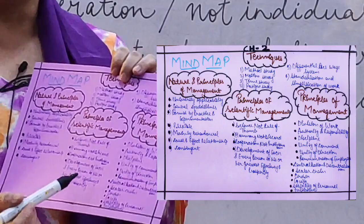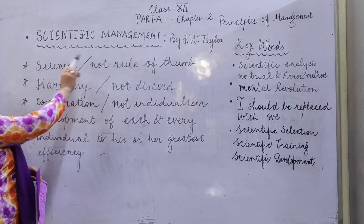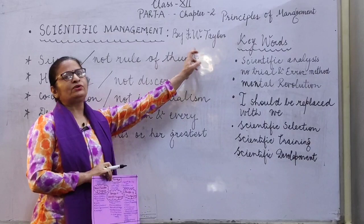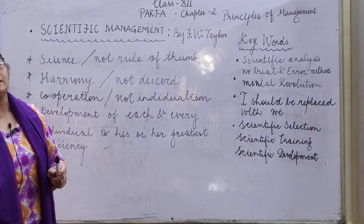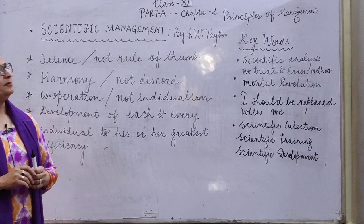Now the sequence is for Scientific Management by F.W. Taylor. With the help of this board, I am going to explain who was F.W. Taylor and what is Scientific Management. First of all, we should know about the person who introduced this science. F.W. Taylor was basically an American. He worked in one company in America — the Midvale Steel Company — as a machinist.